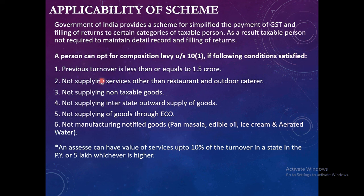All these conditions are based on the previous year. If even one condition is violated in the previous year, they cannot opt for composition levy in the current year. If they satisfied all conditions in the previous year but violate any one condition during the current year, then as soon as they violate any one of these conditions, they will be removed from the composition scheme prospectively.